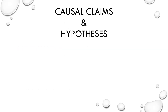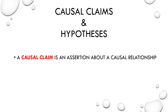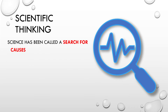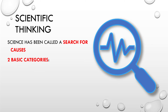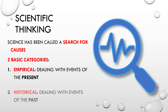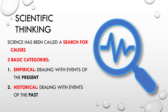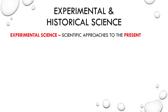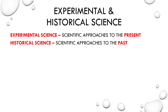Both causal arguments and explanations deal with causal claims — assertions about the cause-effect relationship. But before we're justified in making an assertion scientifically, we have to start with a guess: an initial speculation about a cause, a conjecture, a testable hypothesis that can guide our quest. In our search for causes, we can divide the scientific endeavor into two basic categories: empirical, which deals with events of the present, and historical, which deals with events of the past. It might be better to call these experimental science and historical science — both of which measure their views against the regular pattern of events observed in nature.